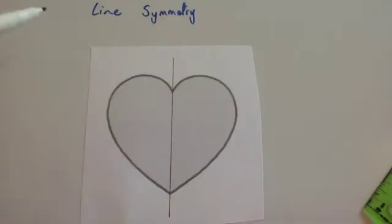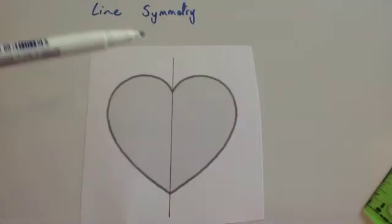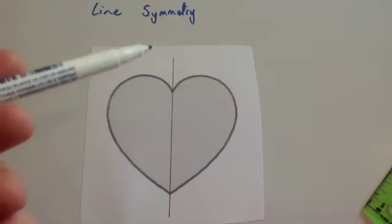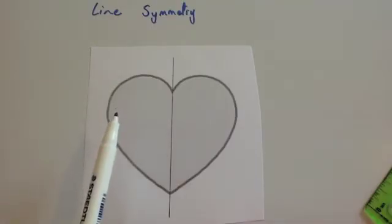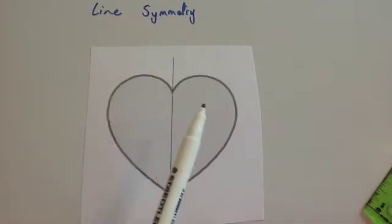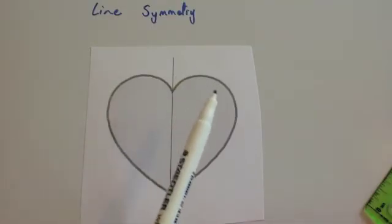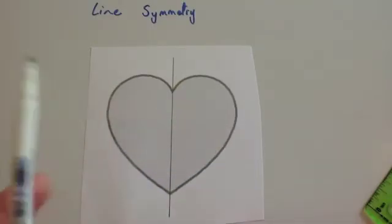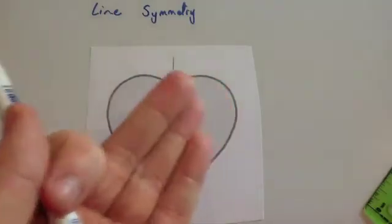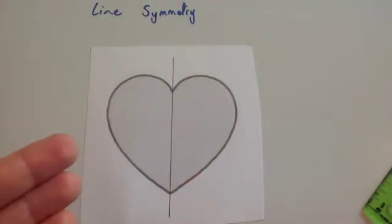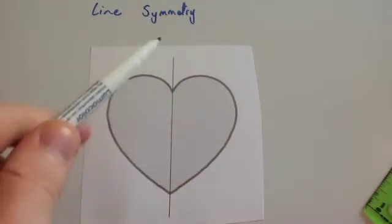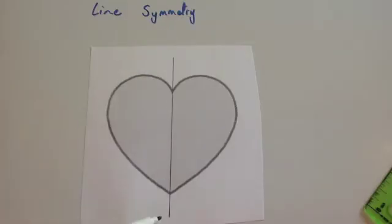In this video we're going to look at line symmetry. Here we've got a heart with a line of symmetry. The reason this is a line of symmetry is because if you were to fold it over from this side to this side, it would fit exactly on top of itself. Likewise, if you fold it the other way, it would fit exactly on top of itself. Therefore, this is a line of symmetry.